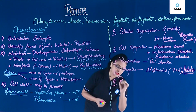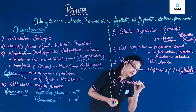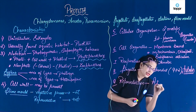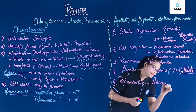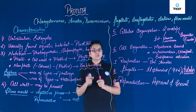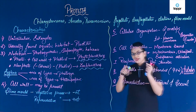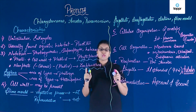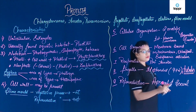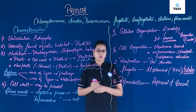Next, let's talk about reproduction. Protists show both kinds of reproduction — asexual and sexual. Sexual reproduction involves meiosis, unlike bacteria where there is no meiosis. However, no embryo is formed in Protista.